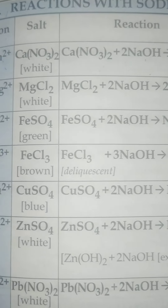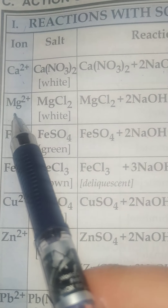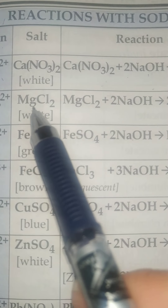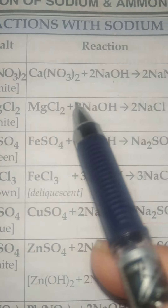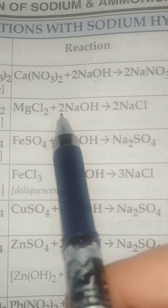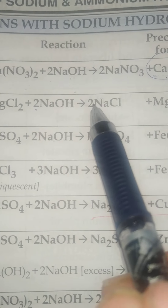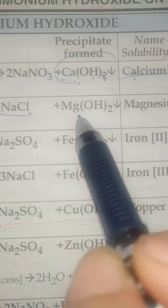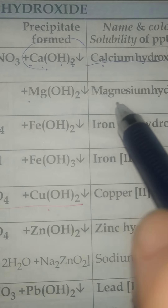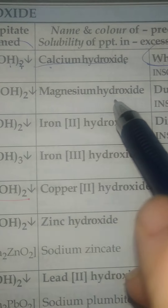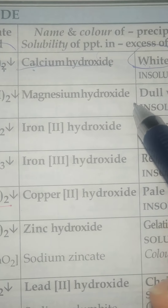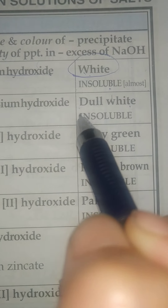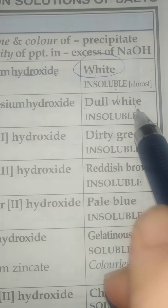The next is magnesium. The salt is MgCl2. When it reacts with sodium hydroxide, it forms sodium chloride and a precipitate of magnesium hydroxide. The color is dull white and it is also insoluble.